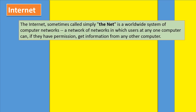The internet, sometimes called simply the net, is a worldwide system of computer networks — a network of networks in which users at any one computer can, if they have permission, get information from any other computer.